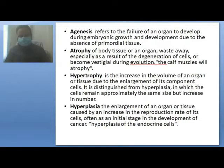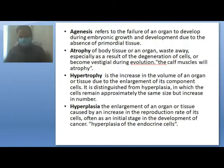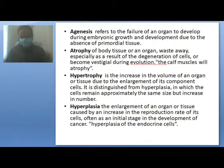Atrophy of body tissue or organ is usually due to wasting away, especially as a result of degeneration of cells, or becoming vestigial during evolution. Calf muscle atrophy is an example. Hypertrophy is the increase in volume of an organ or tissue due to enlargement of its components, mainly the cells. It is distinguished from hyperplasia, in which cells remain approximately the same size but increase in number. Hyperplasia is the enlargement of an organ or tissue caused by an increase in the reproduction rate of its cells, often as an initial stage in cancer development. Hyperplasia of the endocrine cells is an example.